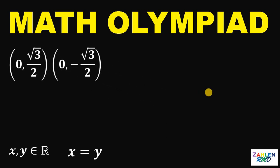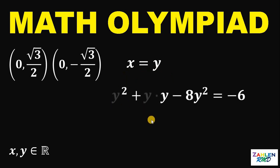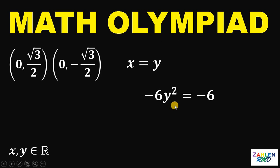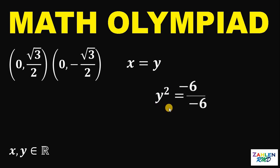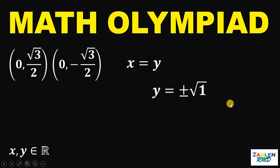For Case 2, x equals y: we replace all x with y in the second equation. y times y is y squared, and y squared plus y squared minus 8y squared is negative 6y squared, which equals negative 6. Dividing both sides by negative 6 gives y squared equals 1. Taking the square root gives y equals positive or negative 1. Therefore, if y equals positive 1, then x equals positive 1, and if y equals negative 1, then x equals negative 1.